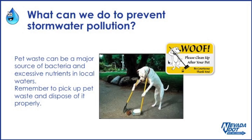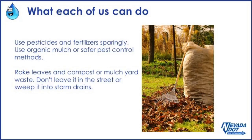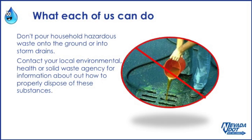So what can we do to prevent stormwater pollution? Pet waste can be a major source of bacteria and excessive nutrients in local waters. Remember to pick up pet waste and dispose of it properly. Use pesticides and fertilizer sparingly. Use organic mulch or safer pest control methods. Rake leaves and compost or mulch yard waste. Don't leave it in the street or sweep it into storm drains. Don't pour household hazardous waste onto the ground or into storm drains.